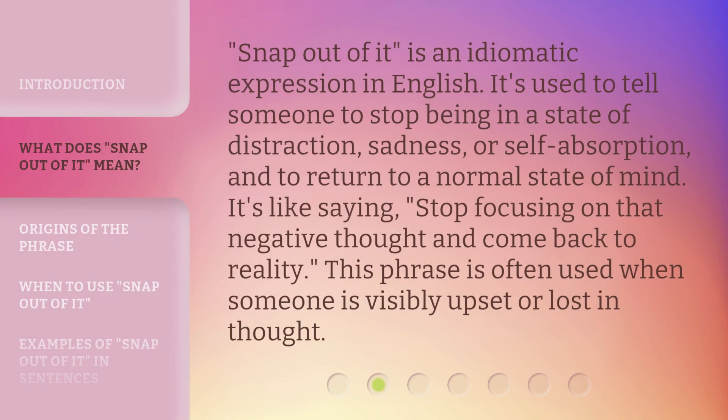'Snap out of it' is an idiomatic expression in English. It's used to tell someone to stop being in a state of distraction, sadness, or self-absorption, and to return to a normal state of mind. It's like saying, 'stop focusing on that negative thought and come back to reality.' This phrase is often used when someone is visibly upset or lost in thought.